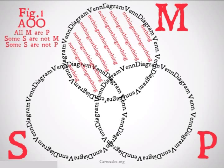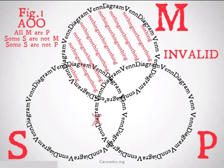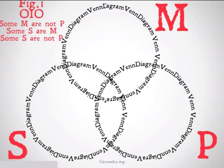Then we will look at our premise, Some S are not M. There are two different places the X could go: it could go in the area that's only S, or it could go in the area that's shared by both S and P. So, once again, we'll put it on the line between these two areas. The conclusion, Some S are not P, is not going to be confirmed. This is going to be invalid because the X could, in fact, be in the area shared by them as opposed to S by itself. So, this is an invalid argument.